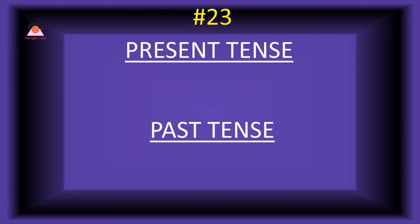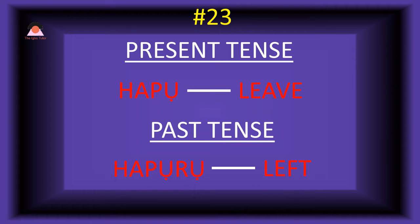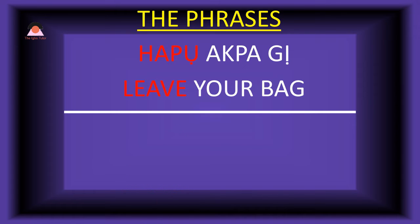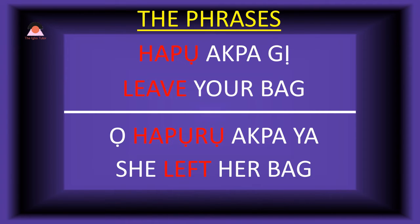Word number twenty-three: 'hapo,' meaning 'leave.' The past tense of hapo is 'haporo,' meaning 'left.' Present tense phrase: 'hapo aba ge' — leave your bag. Past tense: 'hapo-ro aba ge' — she left her bag.